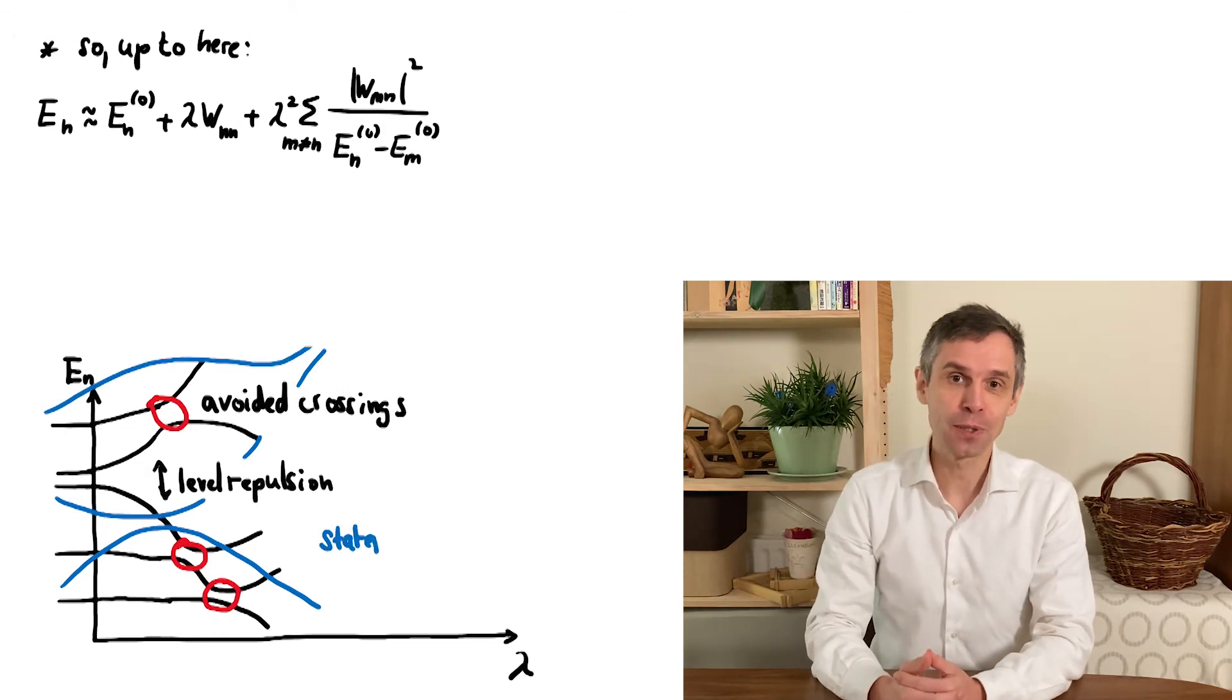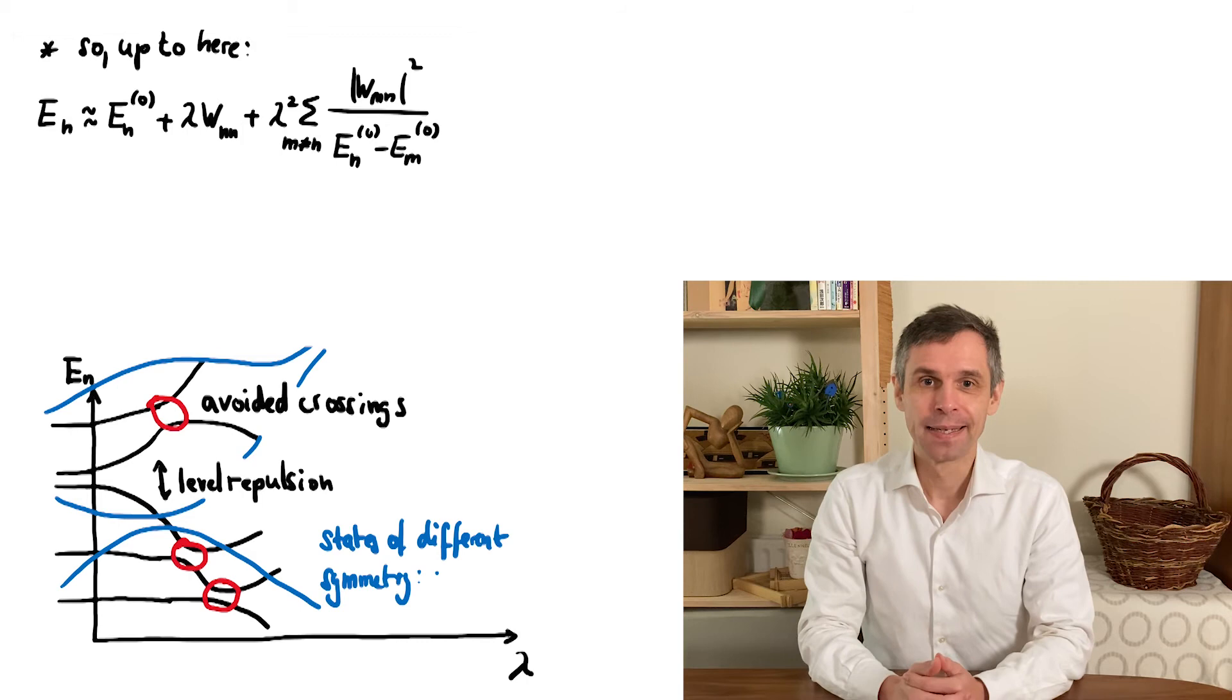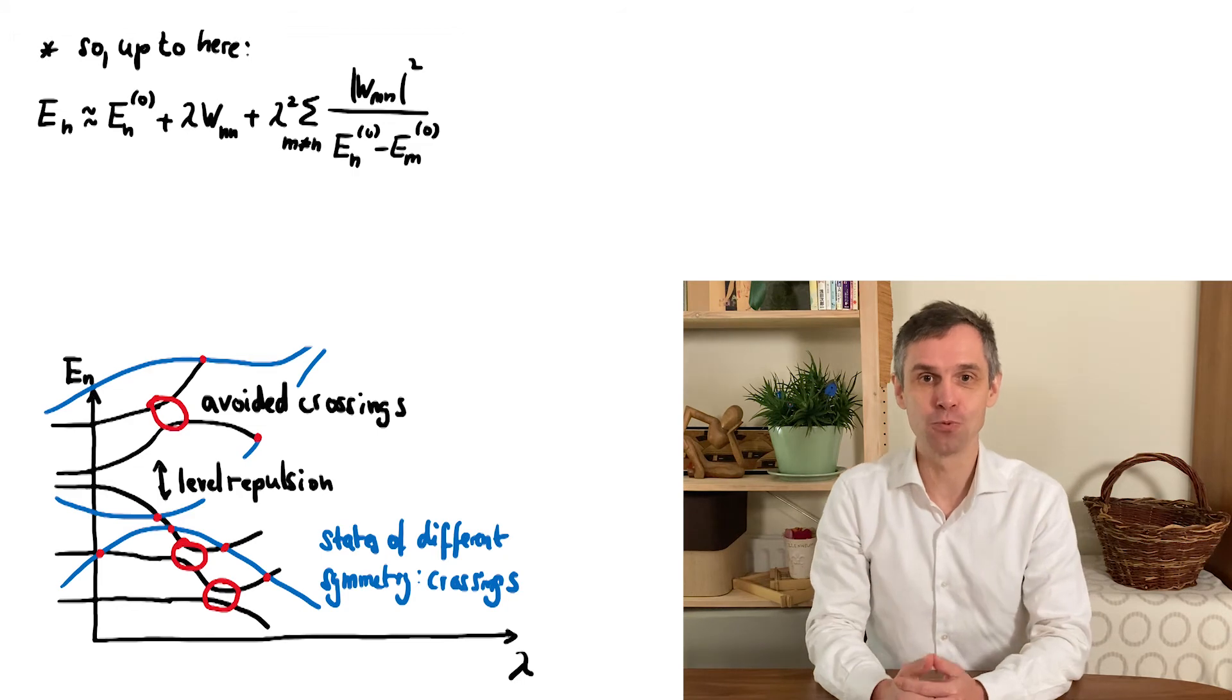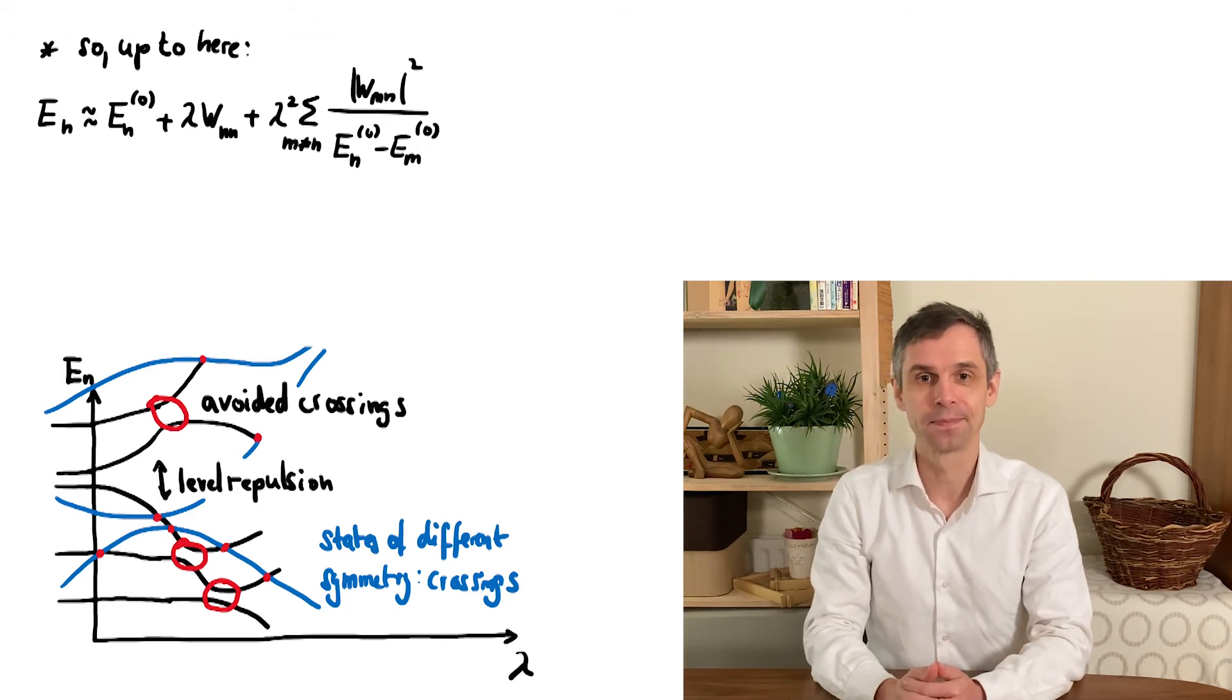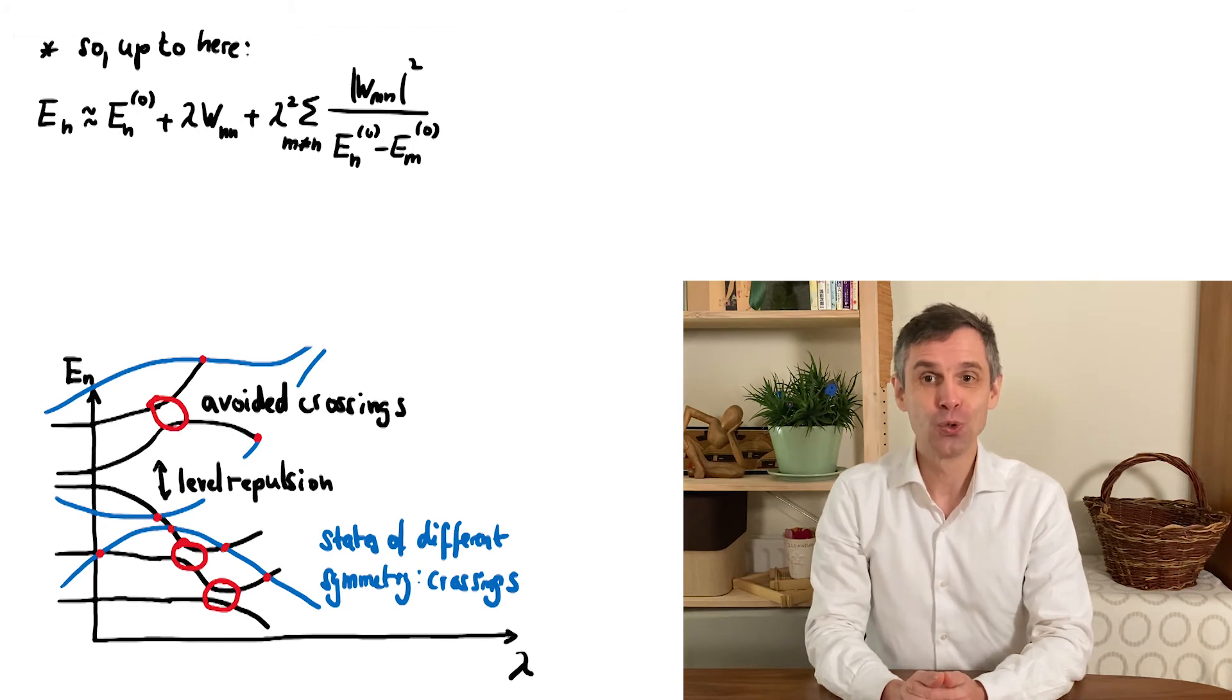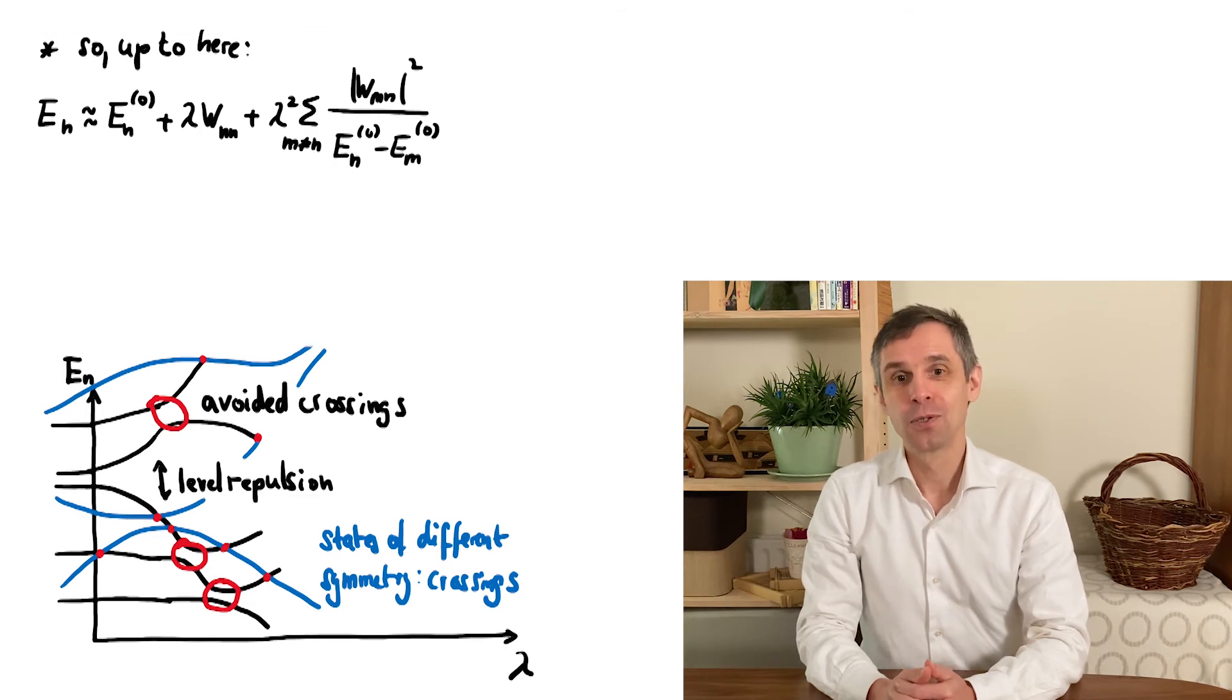The crossing states then behave differently under the symmetry. Say, if this is a spatial reflection and the perturbation preserves the symmetry, this would happen if one state is even and the other one is odd under the reflection. So we can learn about such features even without actually calculating any of the involved expressions. We do not even need to know the unperturbed states for this.